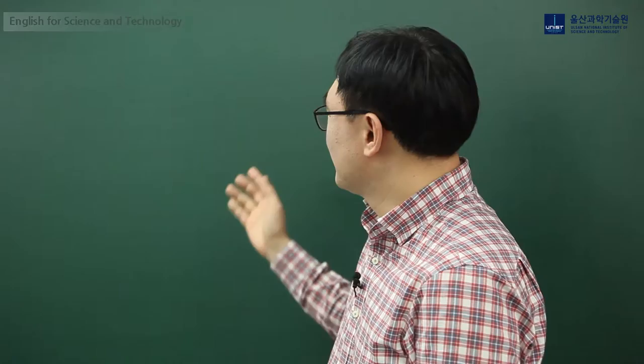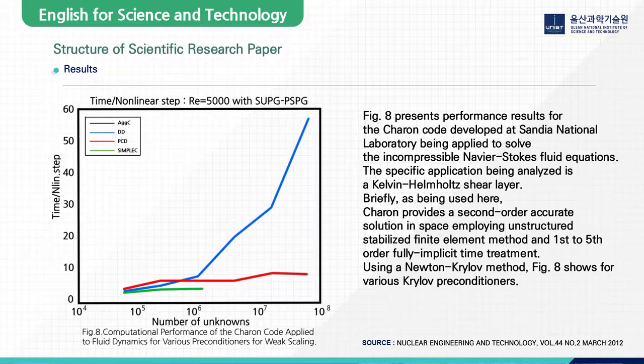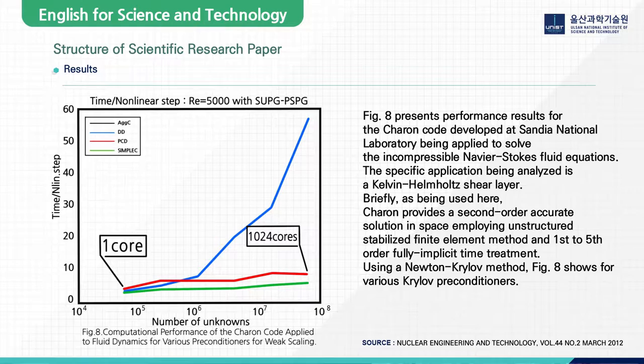This is part of the results section of a research paper on nuclear engineering. The results section reports only the main findings based on figures, tables, or graphs to summarize the data. In the text part here, to explain the graph, we see sentences like 'Figure 8 presents performance results' or 'Figure 8 shows.'